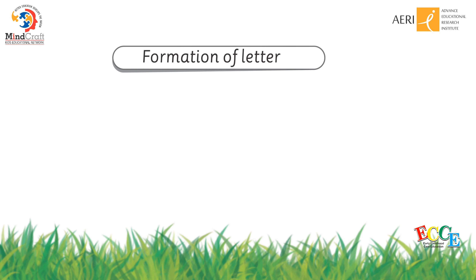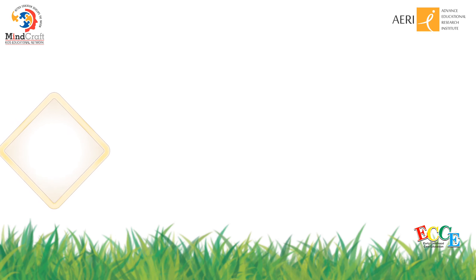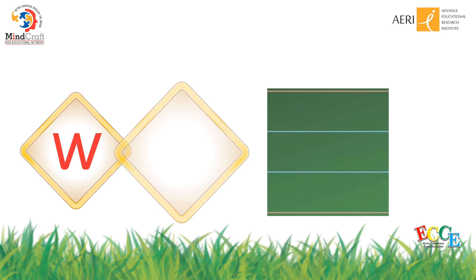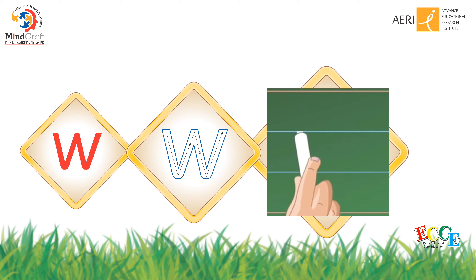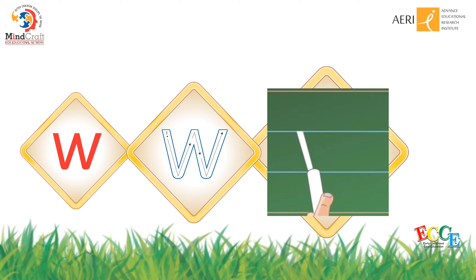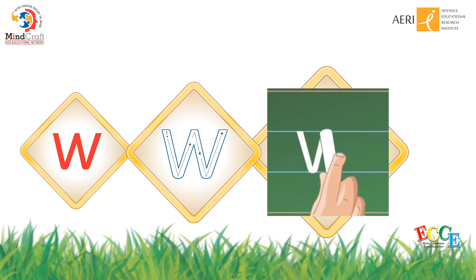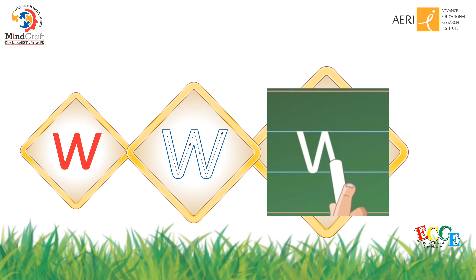Now let's learn the formation of letter W. This is letter W, it sounds W. Let's learn its formation. You will start from the dot, make a V and make another V. It's letter W.